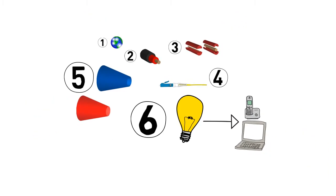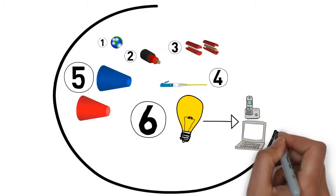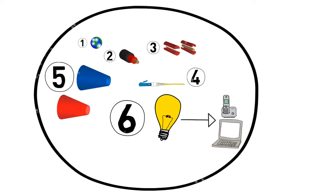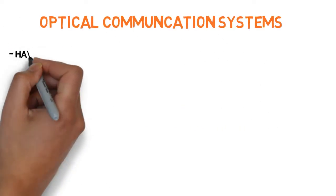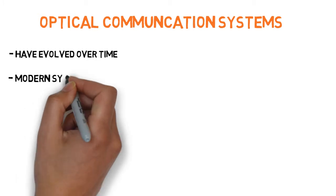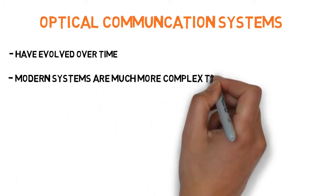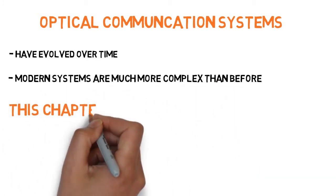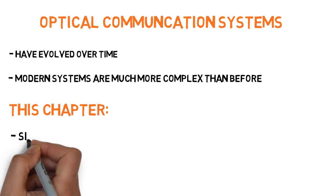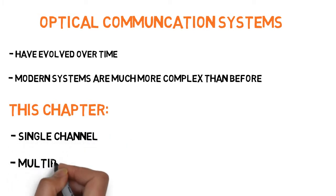An optical communication system encompasses all these elements in transmitting optical data over long distances. The way we do this has evolved over time, and modern systems are much more complex than their predecessors. Today, we will look at basic single-channel systems as well as the more advanced multiplex systems.